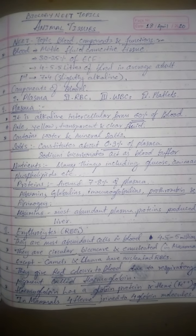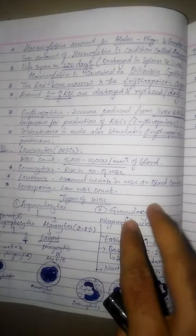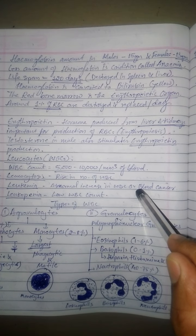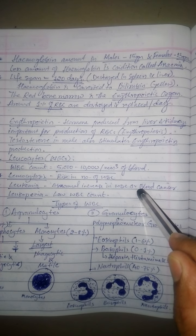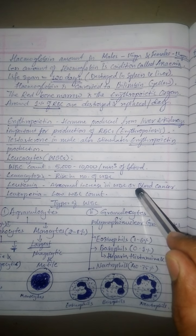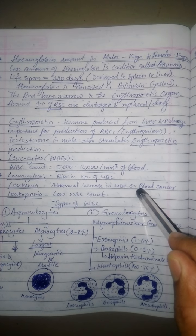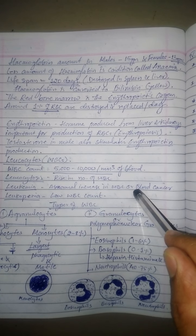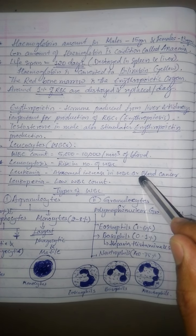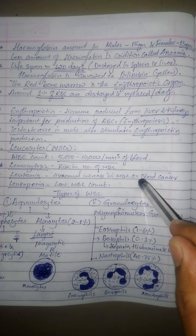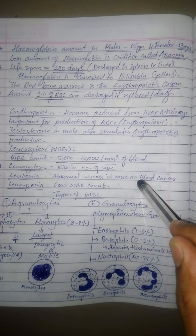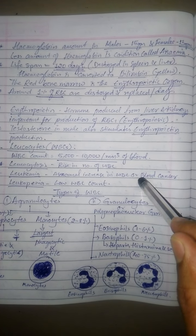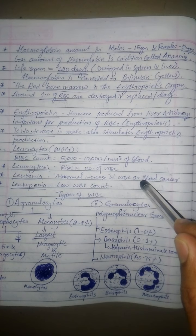The amount of hemoglobin differs between males and females. In males it is around 12 to 15 grams, and in females it is around 10 to 13 grams, so females have slightly less hemoglobin compared to males. Less amount of hemoglobin is a condition called anemia. The lifespan of RBC is around 120 days.